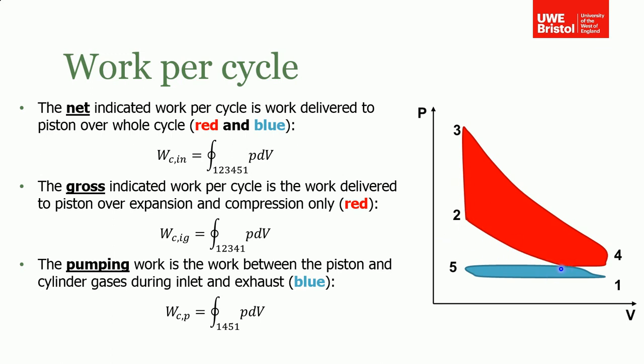The blue is the induction and exhaust stroke. The net indicated power is the cyclical integral—it's the work which is done as the cycle integral as you go from one to two, three, four, five back to one. So that includes the red bit and the blue bit. Sometimes engine designers talk in terms of the gross indicated work—in other words, what you would get just from the power stroke if you could neglect your pumping losses, so that's the red bit only.